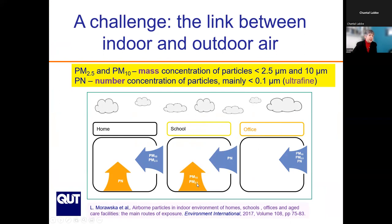In schools in particular, we found that the source of PM2.5 and PM10, which are mainly larger particles, was inside, while the smaller particles were coming mainly from outside. Inside, studies reported the sources were particularly dust and sand brought in by the students. Particle number concentration was increased because of outdoor combustion sources, in particular vehicles in proximity to the school.